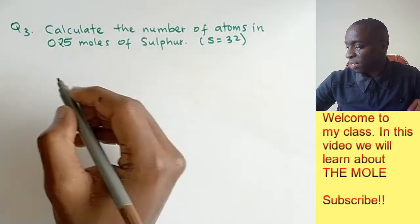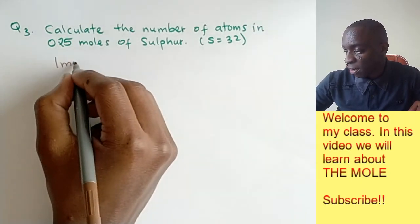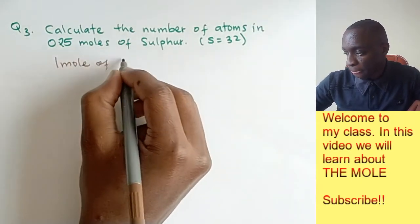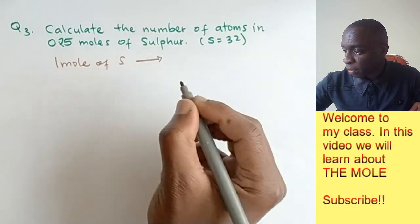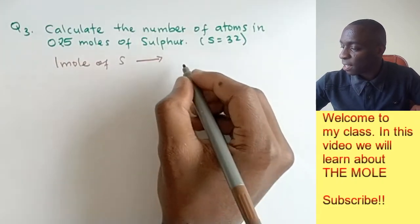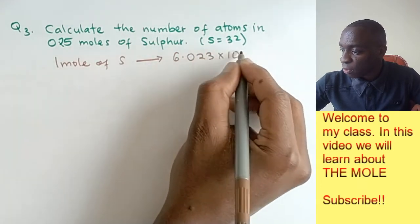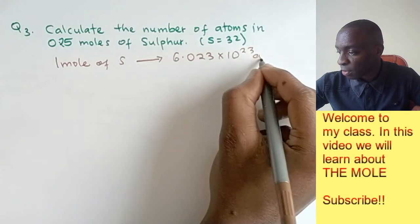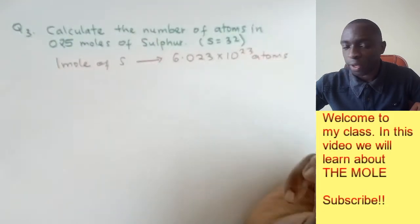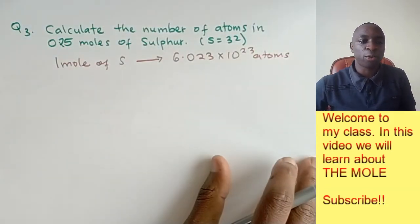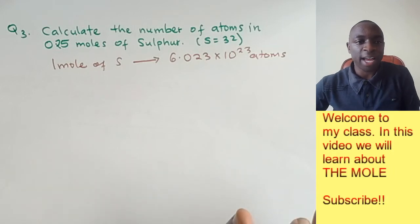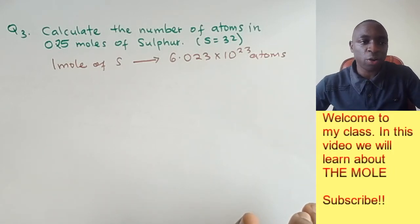One mole of sulfur contains 6.023 times 10 to the power of 23 atoms. How about the 0.25 moles of sulfur we've been provided?